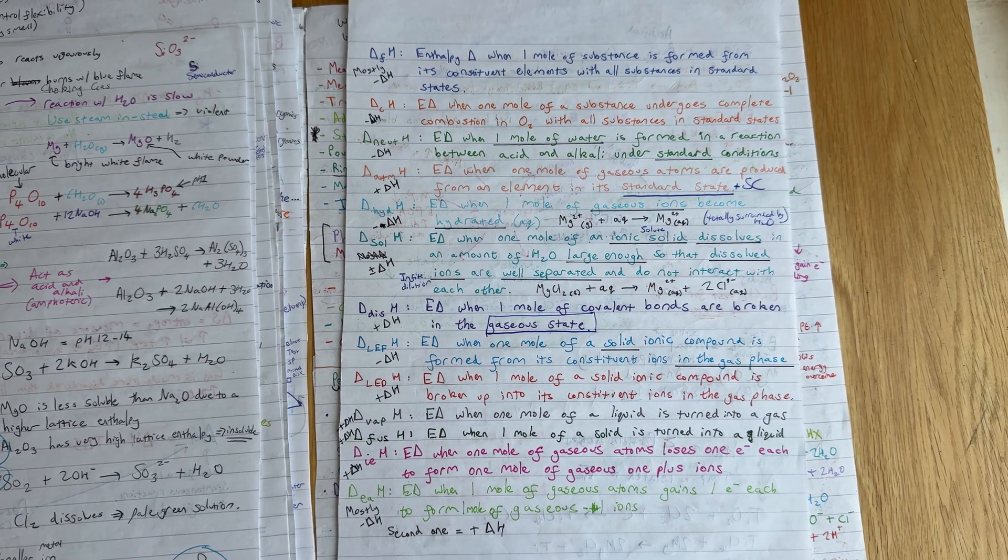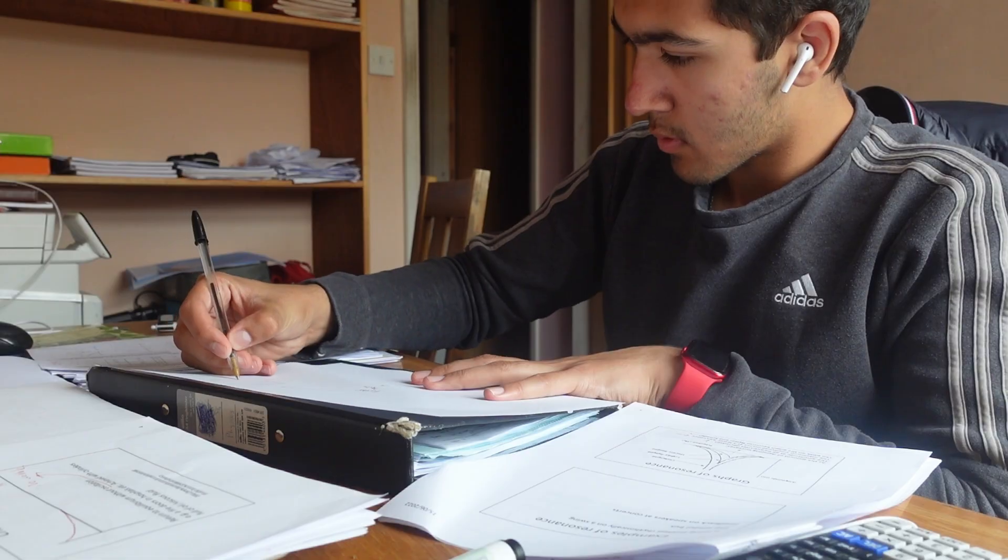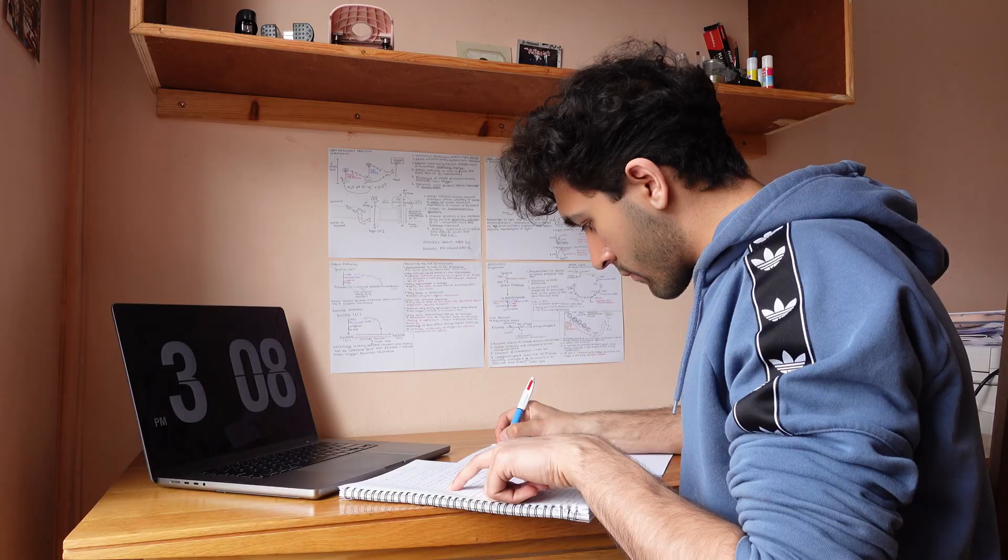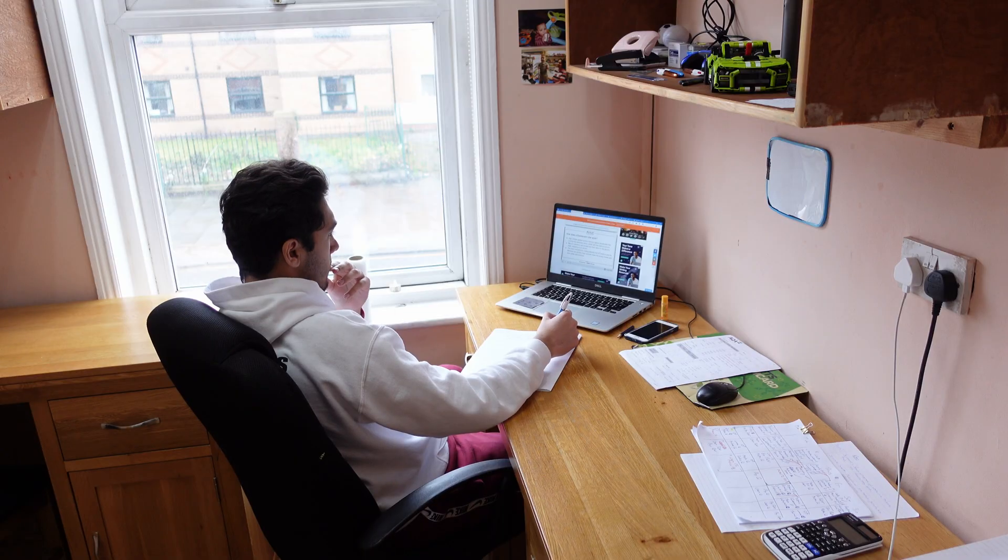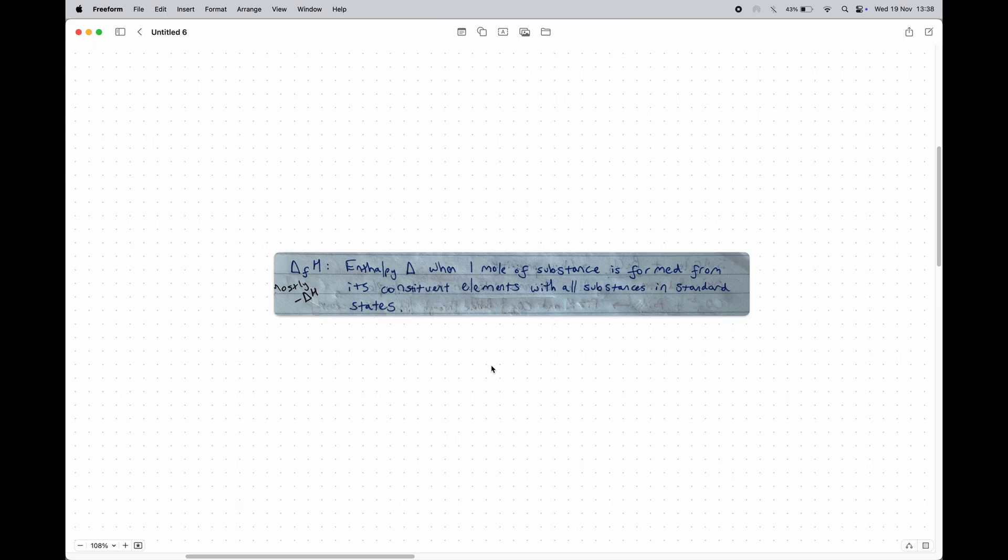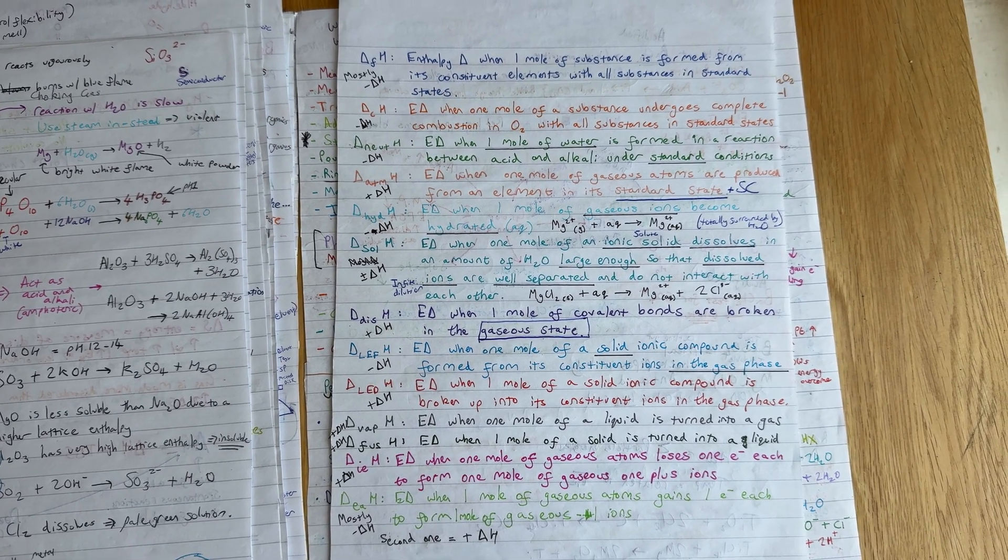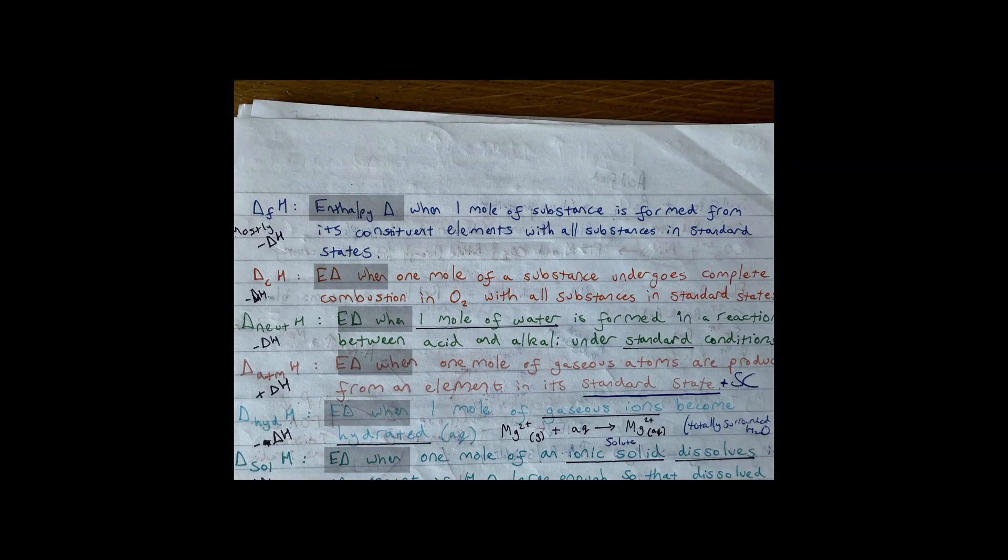Tip 7: For definitions, I would just use repetition. Use flashcards, or you could also write them all out and then check them with your notes. It also helps to break down the definitions into smaller bits. As an example, how would I learn the definition for enthalpy change of formation? First, I identify patterns within all the definitions of enthalpy change. All of them start with 'the enthalpy change when,' and most of them mention one mole and standard states, so that's a pattern.